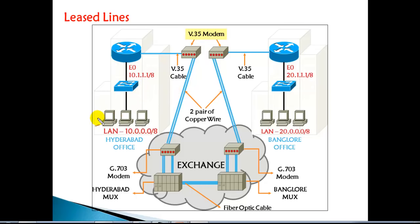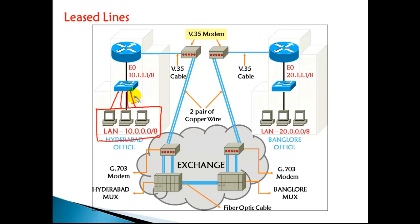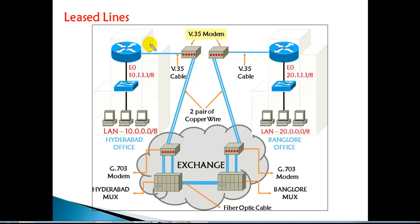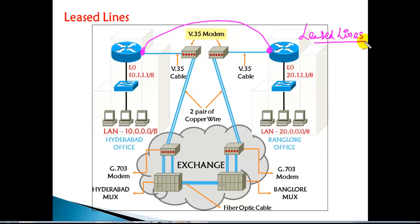Let's take an example: I have a LAN here which is my Hyderabad branch, with all computers connected to a centralized switch. Similarly, I have another LAN with computers connected to a centralized switch. I want to ensure users in the Hyderabad LAN can communicate with users on the other network. For that I need to contact the service provider, who will provide a leased line connecting from one router to the other router.